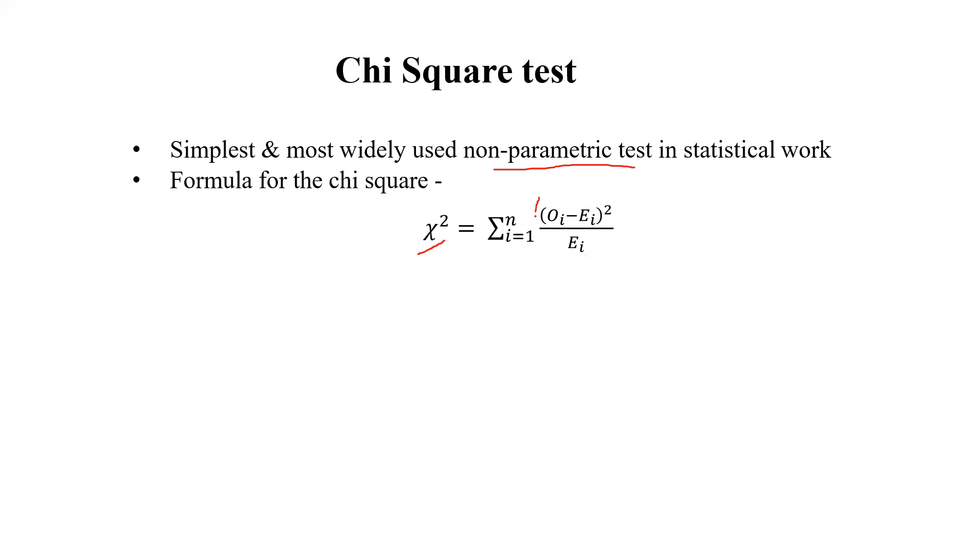This is the whole summation. Here O represents the observed number of frequency, which is already given in the question, and out of that observed number we'll create the expected number of frequency which is represented by E.